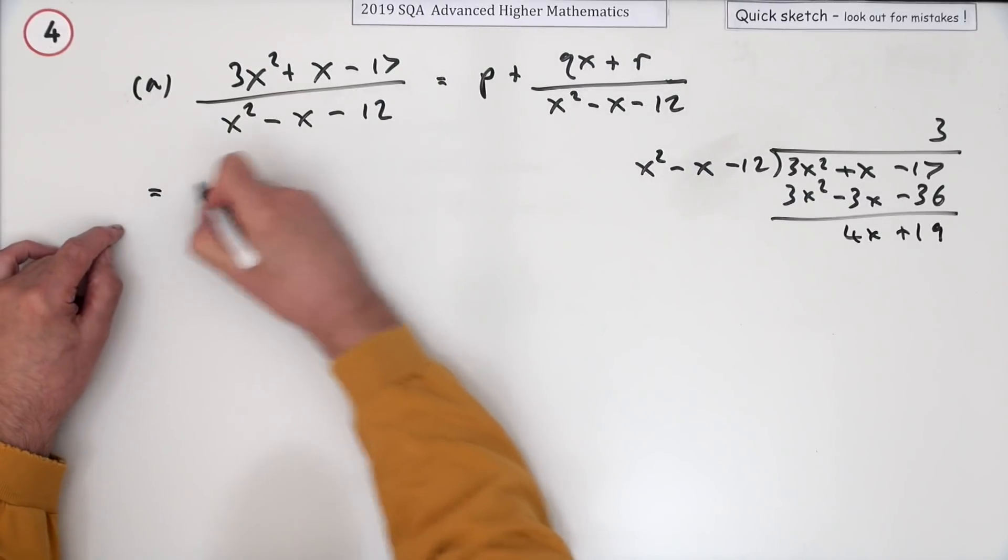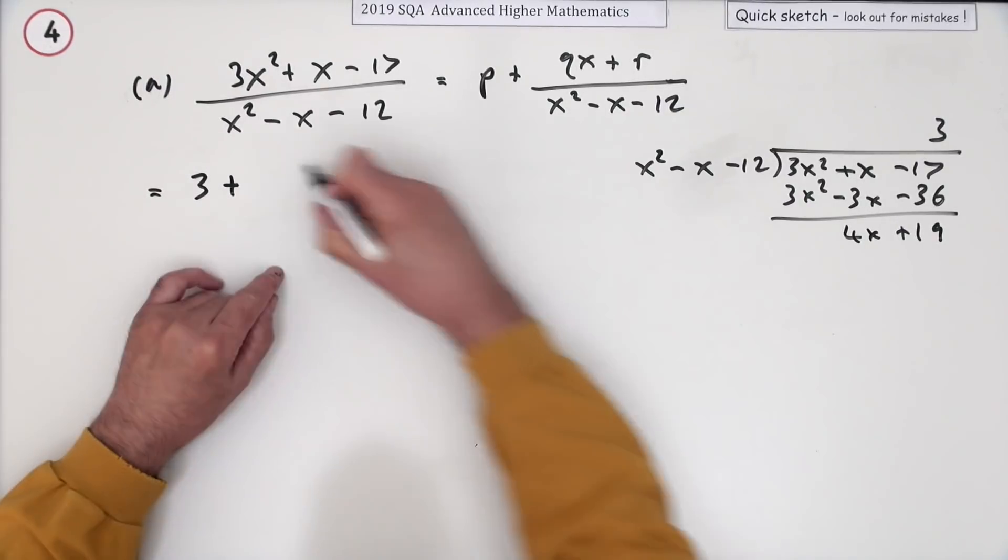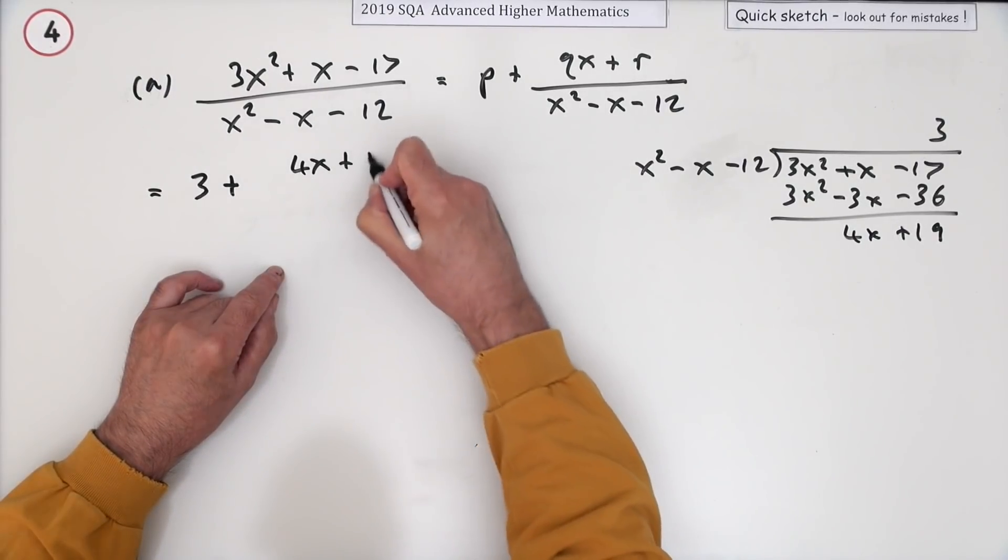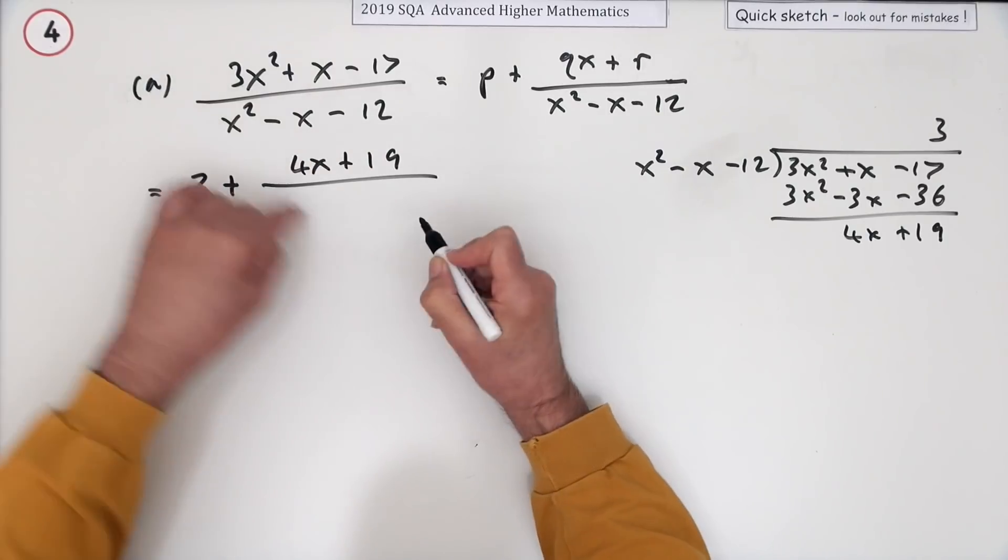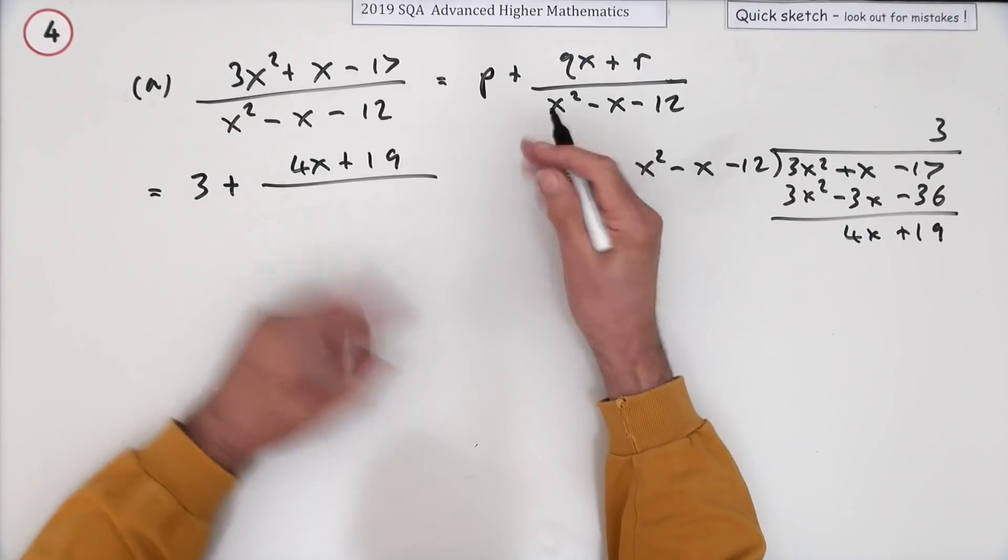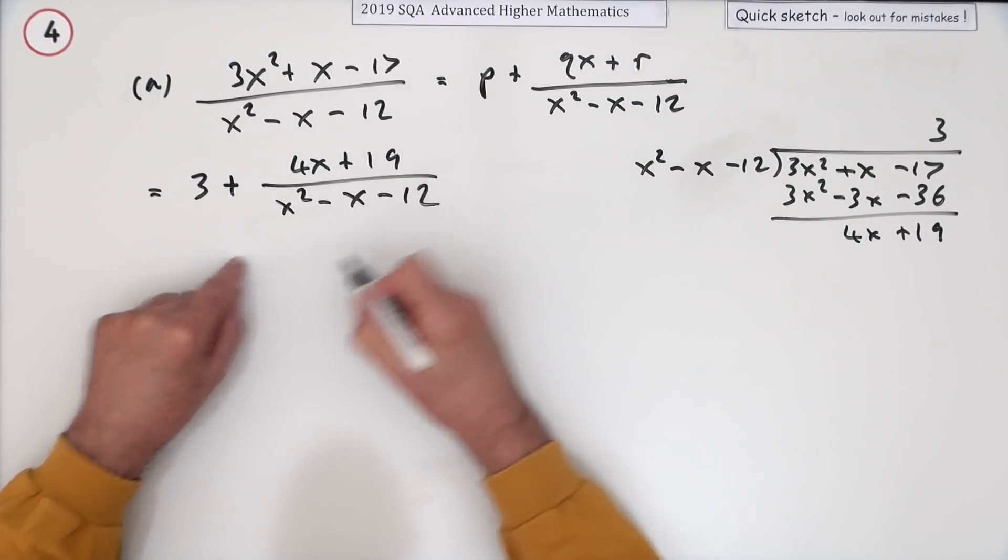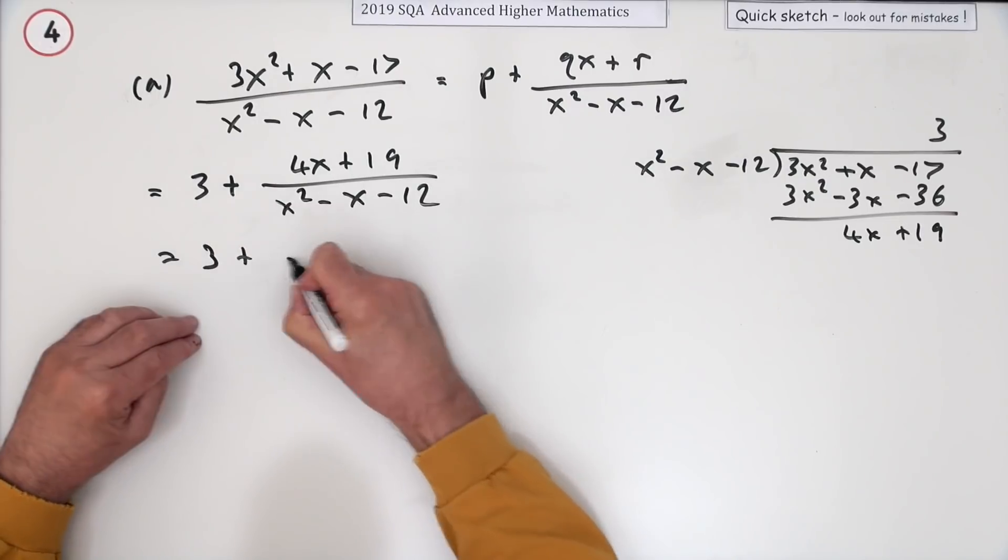Which means that rewrites as 3 plus, and then it'll be 4x + 19 over the denominator. Now I did say express it in that form, which is a nuisance because I'd rather factorize it, but not wanting to chance it, I'll just express it in that form. There we go, and I'll have to write it again because you know that if you're going to express it in partial fractions you need to factorize that denominator, or there wouldn't be a question there.